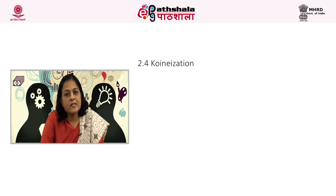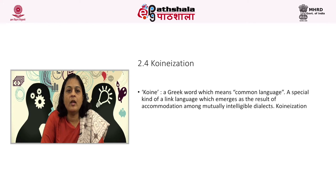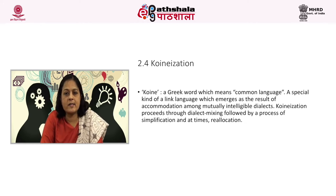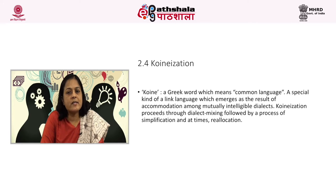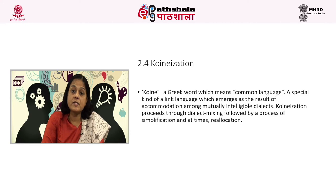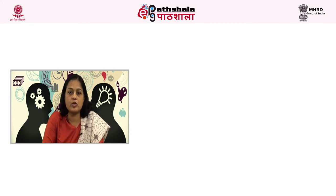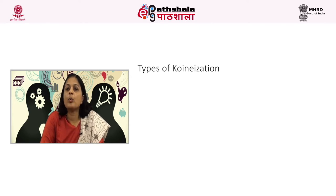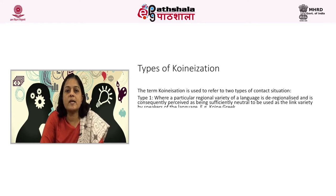We now proceed to look at the next mechanism of language contact and change: koineization. Koine is a Greek word which means common language. It is a special kind of link language which emerges as a result of accommodation among mutually intelligible dialects. Koineization proceeds through dialect mixing followed by a process of simplification and at times a process of reallocation. The process is characterized by the gradual loss or erasure of linguistic differences which have traditionally distinguished dialects of a language. The term koineization is used to refer to two types of contact situations. The first is where a particular regional variety of a language is de-regionalized and is consequently perceived as sufficiently neutral to be used as a link variety by speakers of the language, for example Koine Greek.